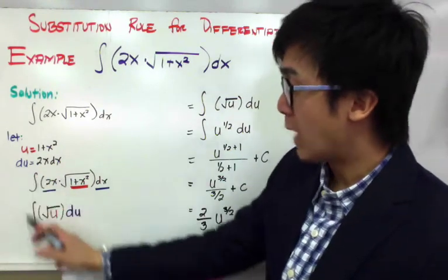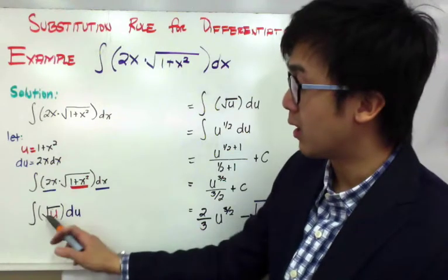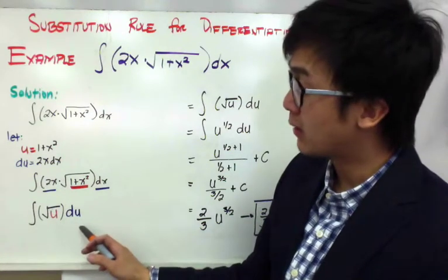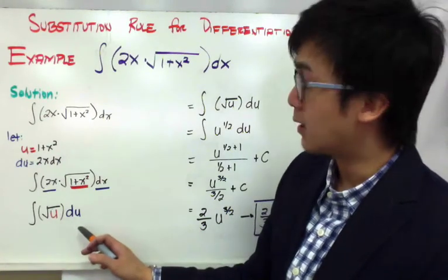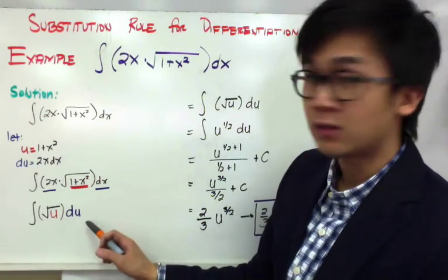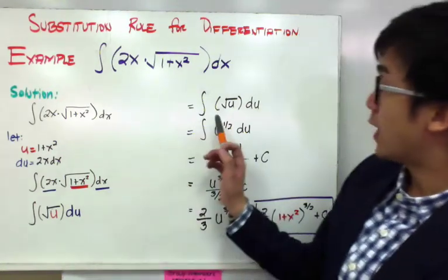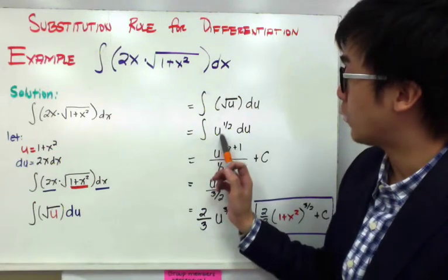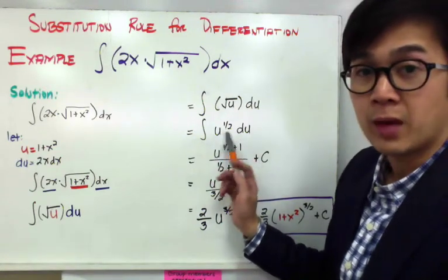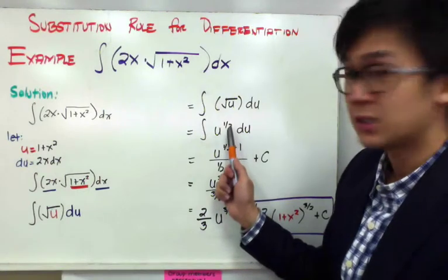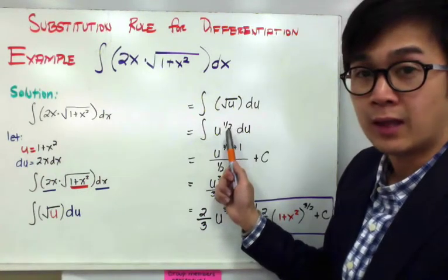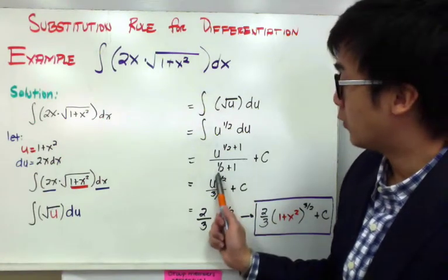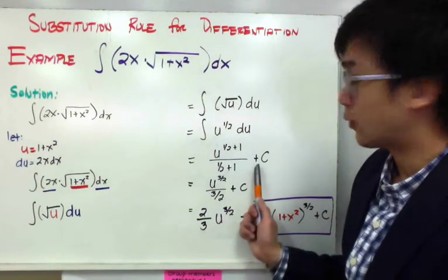Now we have a new integral: the integral of the square root of u du, and we can integrate it using the previous rules of integration. The integral of √u du is the same as the integral of u raised to one-half du. By the rule of integration, you add 1 to your exponent and bring it down as your denominator, giving you u raised to one-half plus one, all over one-half plus one, plus C.